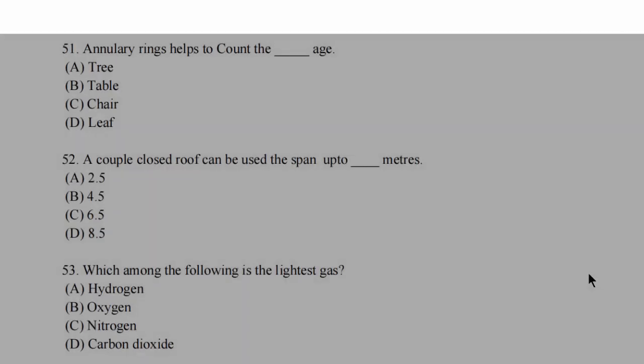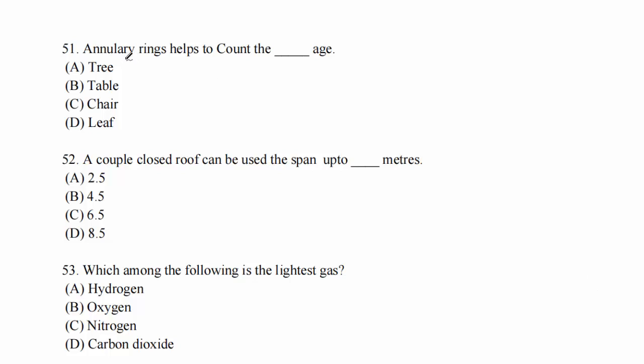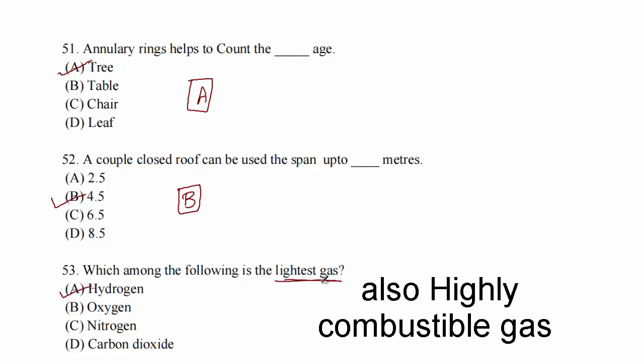Moving on to the 51st question: annulary rings help to count the age of tree, table, chair, or leaf? It is used to count the tree's age. Question 52: a couple closed roof can be used to span up to how many meters? It is used to measure up to 4.5 meters. Question 53: which among the following is the lightest gas? Hydrogen, oxygen, nitrogen, or carbon dioxide? The lightest gas is hydrogen.